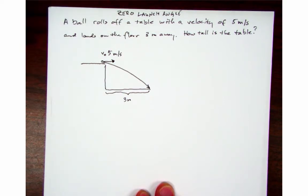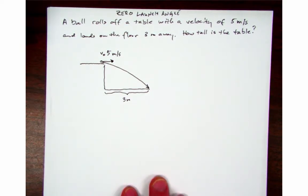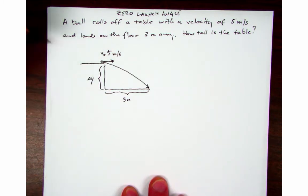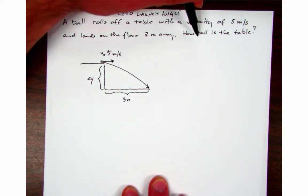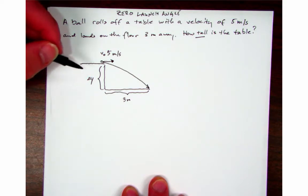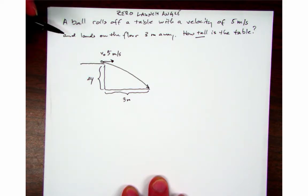I want to find delta y or the vertical displacement. The actual question says how tall is the table, so that's going to be the absolute value of my displacement. So look at this problem and I want to go to my variable chart first.